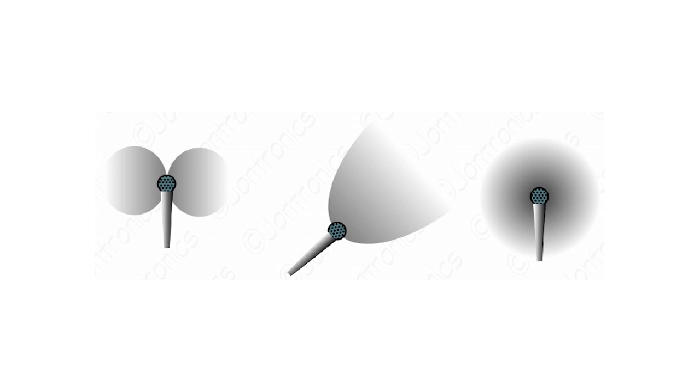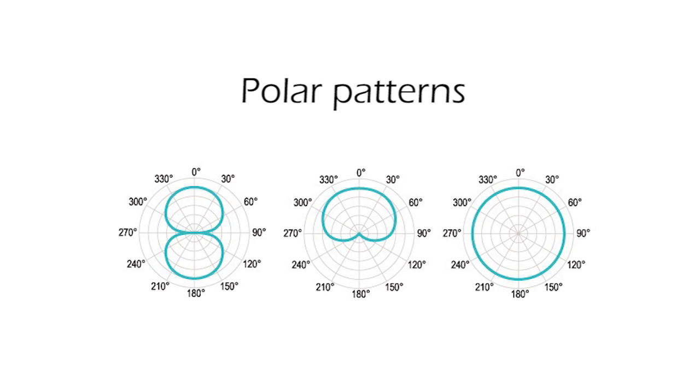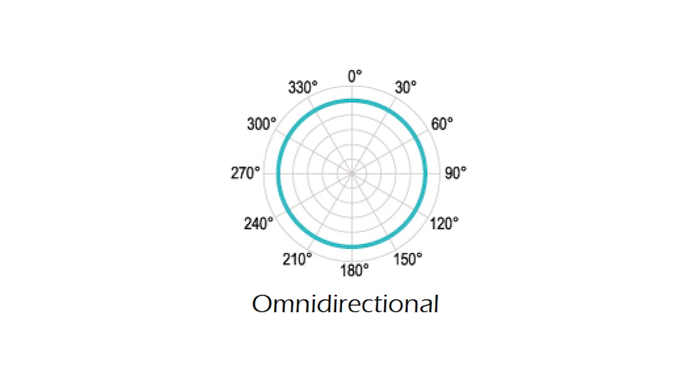Directionality refers to how sound intensity is perceived when coming from different directions, and is represented with one of these graphs called polar patterns. These graphs are interpreted with the distance from the center to the curve in a certain direction. For example, an omnidirectional microphone perceives sound coming from any direction in a uniform manner, so its graph is such that the distance from the center to the curve is the same in any direction, that is, a circle.